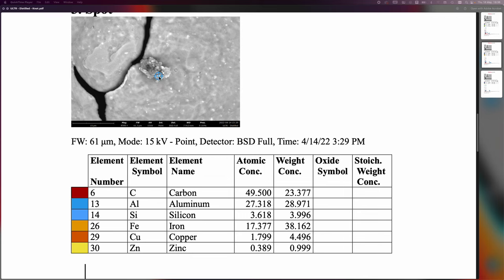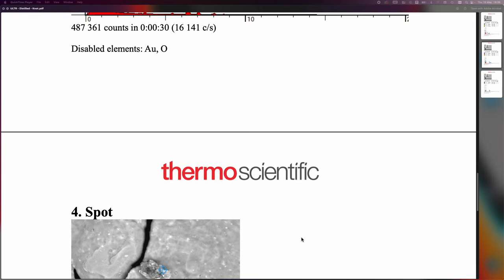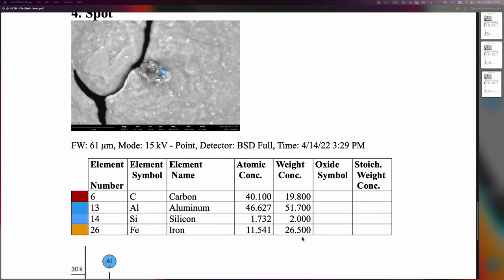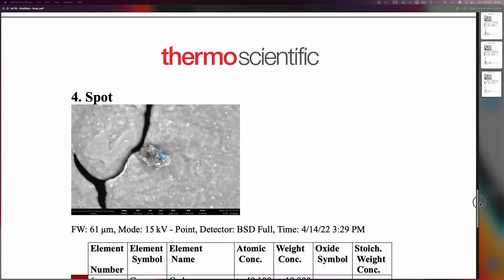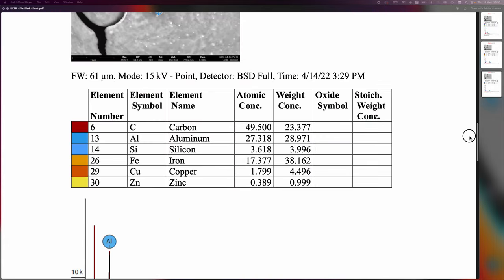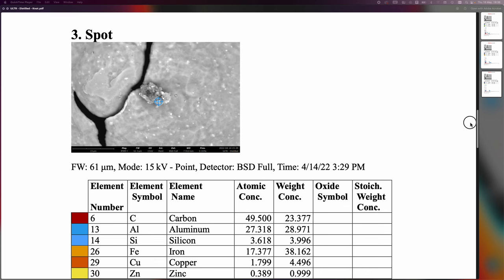Looking at some other spots here we have copper and zinc in this little blob which really shouldn't be there. We also have again iron, silicon, and carbon. In the last of the sample points here, again more iron, 26.5 percent iron in that case.